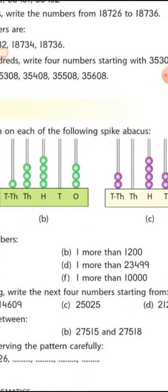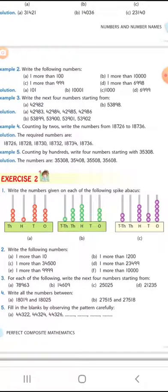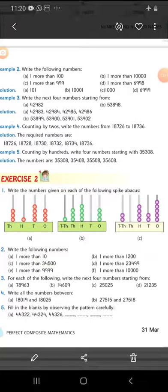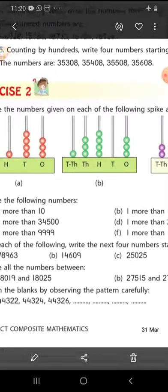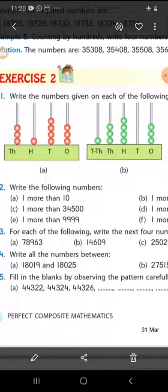The next two parts of question one you have to do by yourself — practice neatly. Now moving to question number two: write the following numbers. In part A, it says one more than ten. If we add one to ten, the next number is eleven — the answer is 11.